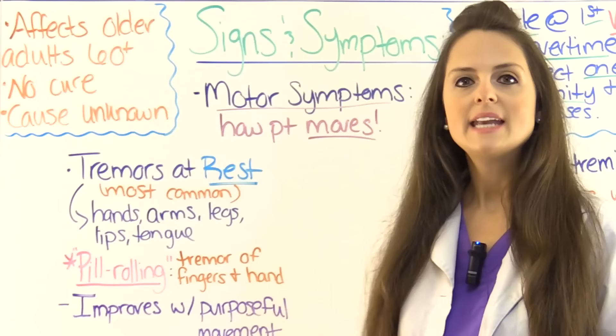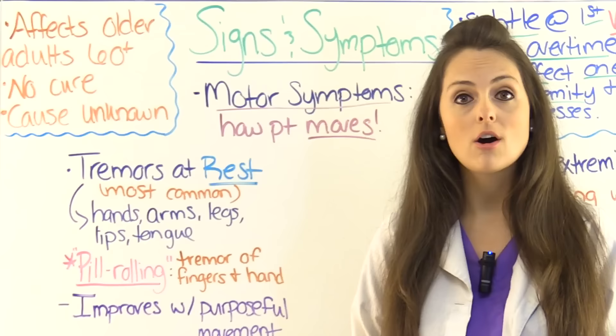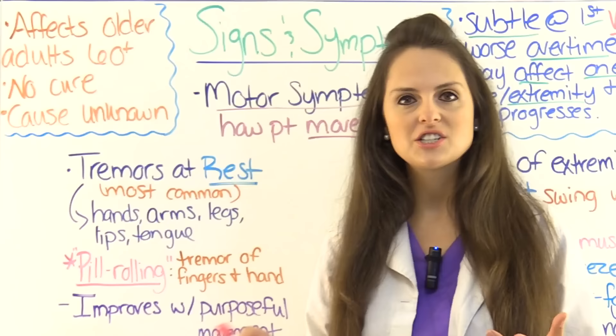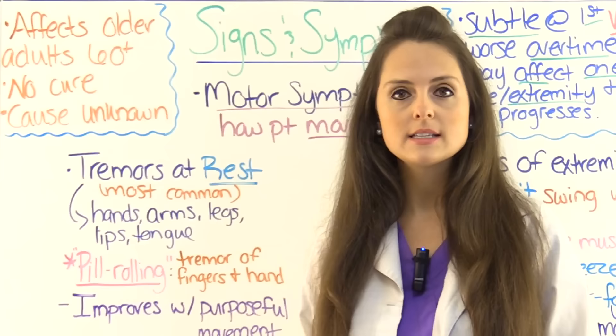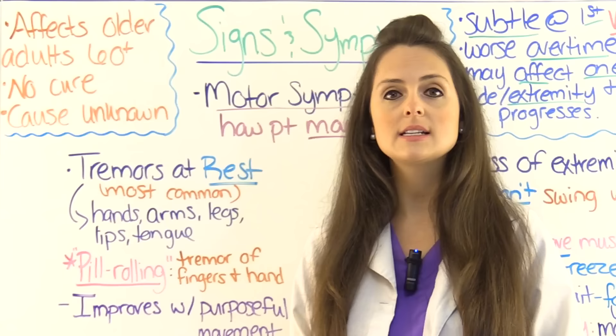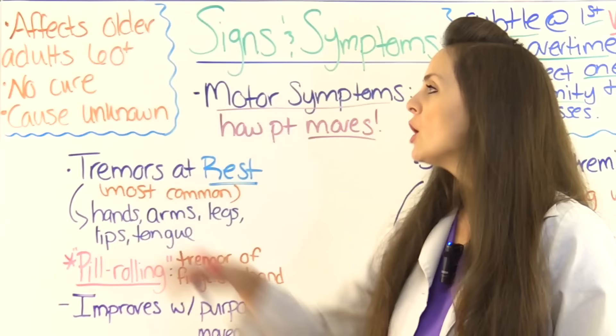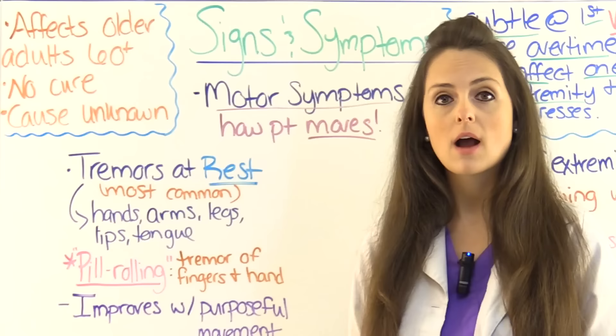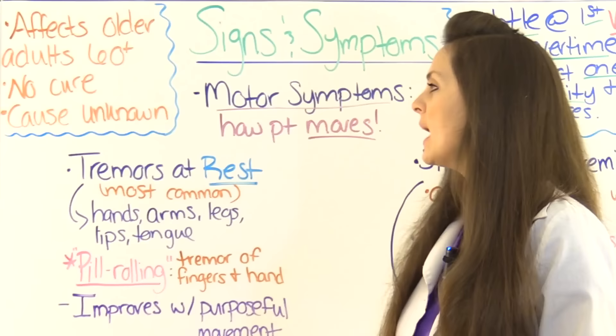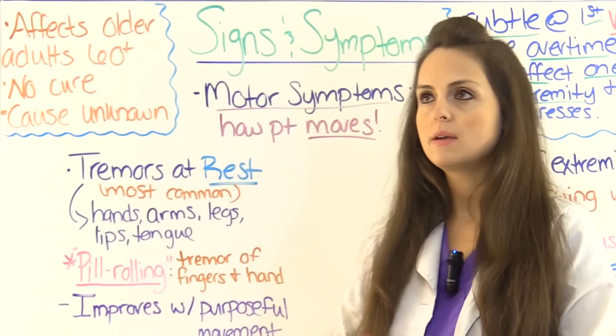Parkinson's disease tends to usually affect the older adult population — 60 plus — however it can affect young people. For instance, the well-known actor Michael J. Fox was diagnosed with Parkinson's disease at the age of 29. Currently there is no cure for Parkinson's, however medications can be prescribed which can decrease the signs and symptoms. The cause of Parkinson's is not fully understood — they think maybe it could be genetic or an environmental issue.